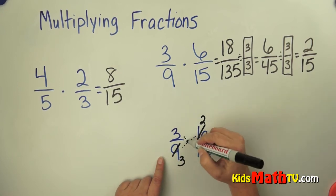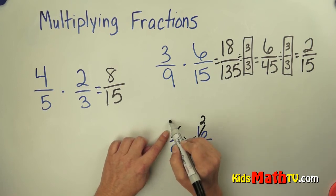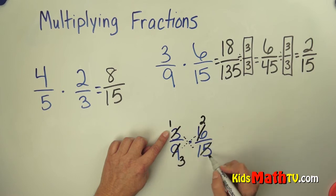Then I look at these numbers. Is there a number that will divide 3 and 15 evenly? Yes, 3. So I divide by 3. 3 divided by 3 is 1, 15 divided by 3 is 5.